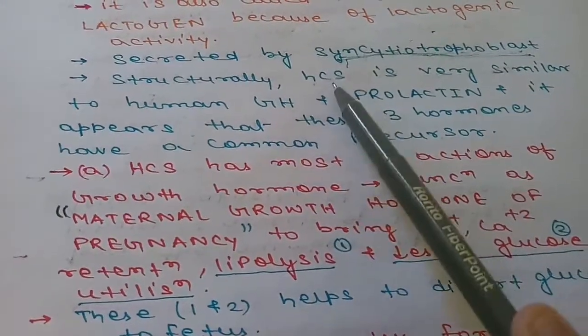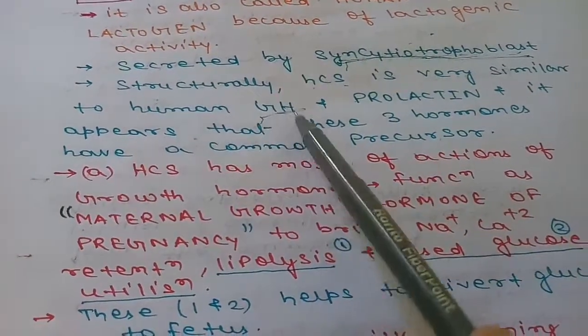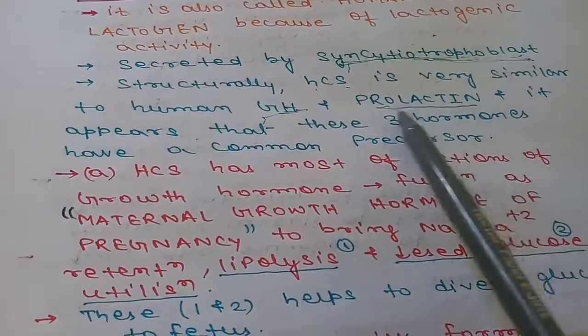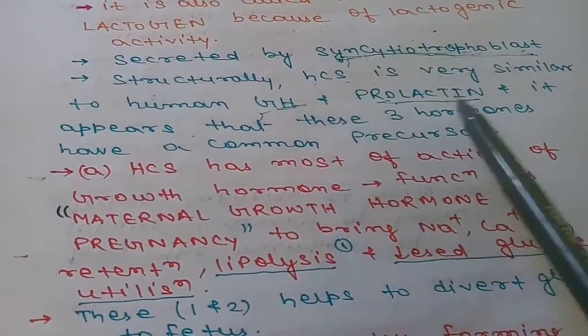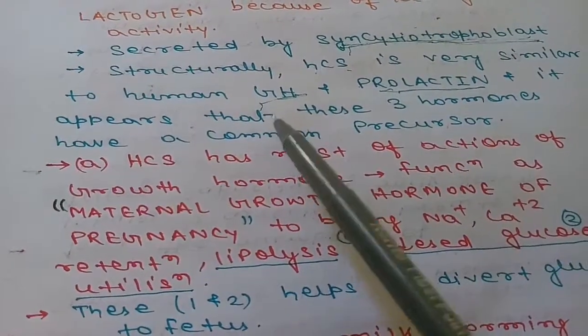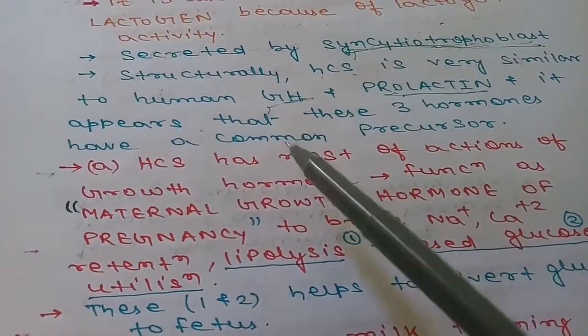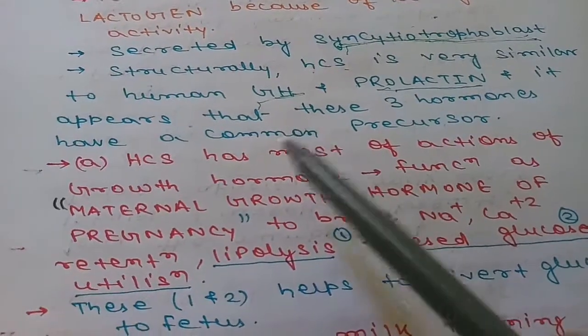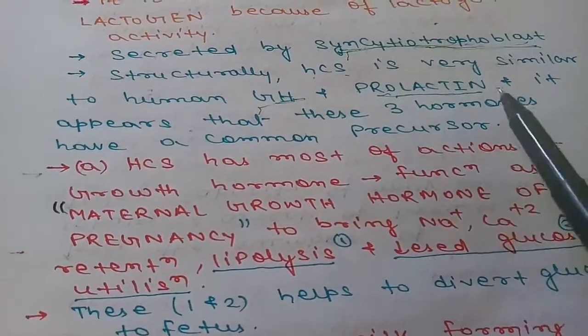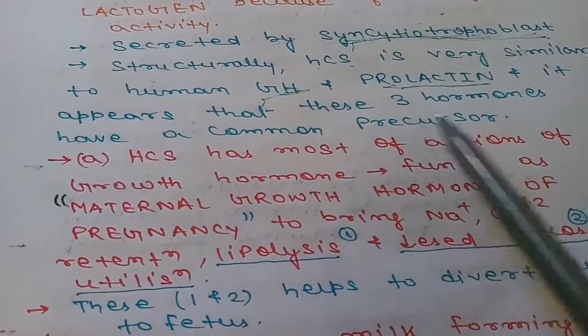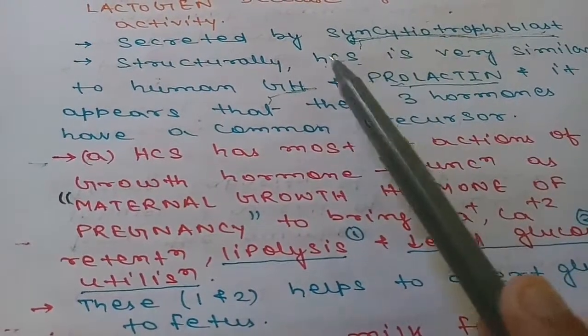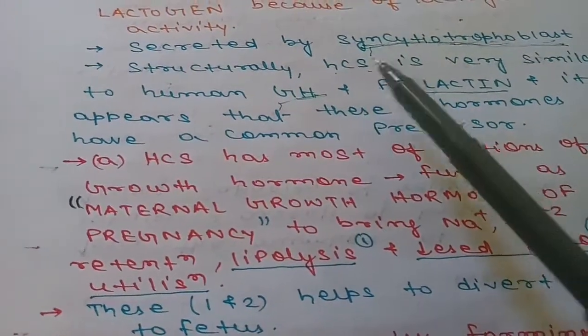Structurally, HCS is very similar to growth hormone and prolactin. It appears that growth hormone, prolactin, and HCS have emerged from a common precursor because of the structural similarity between these three hormones.